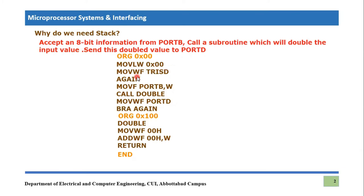The label 'again' is just a label, so we ignore it for encoding. The third instruction is MOVF port B to W, so we copy the content of port B — which is the input port — sending it to the working register. Whatever data comes from port B is stored in working register after this instruction. Then we use CALL double. CALL is the instruction used to call a subroutine, and the subroutine name here is 'double'. The CALL instruction switches control from the main program to the subroutine named double.